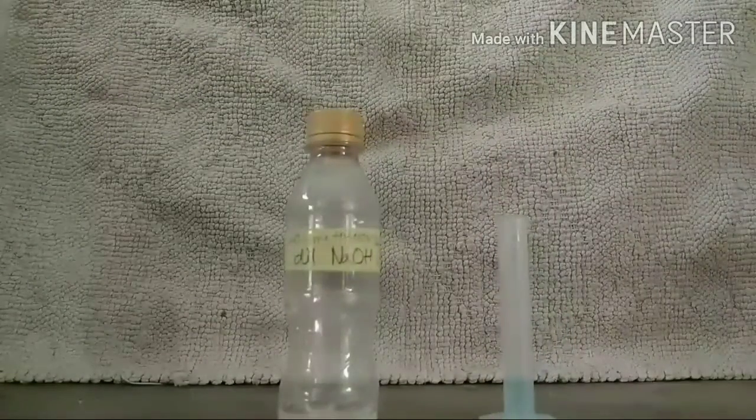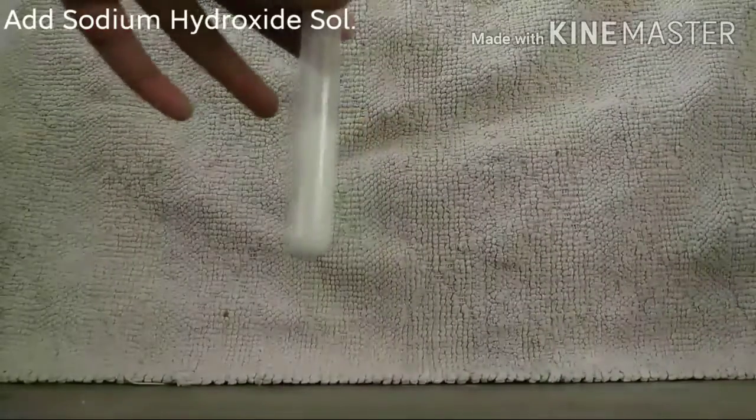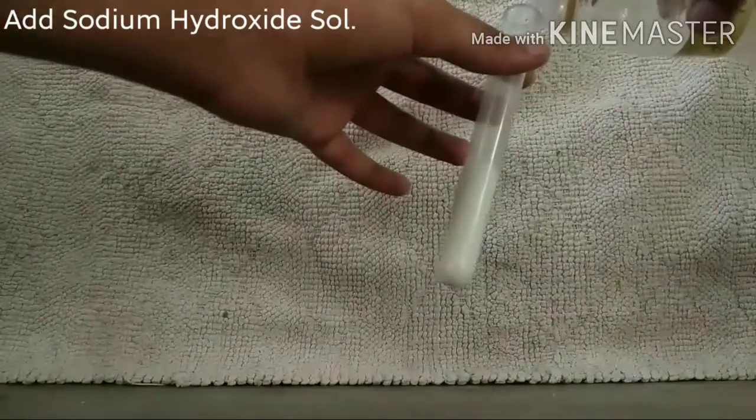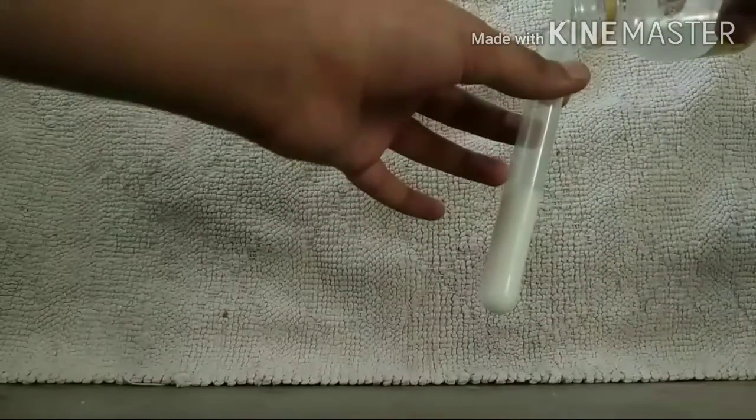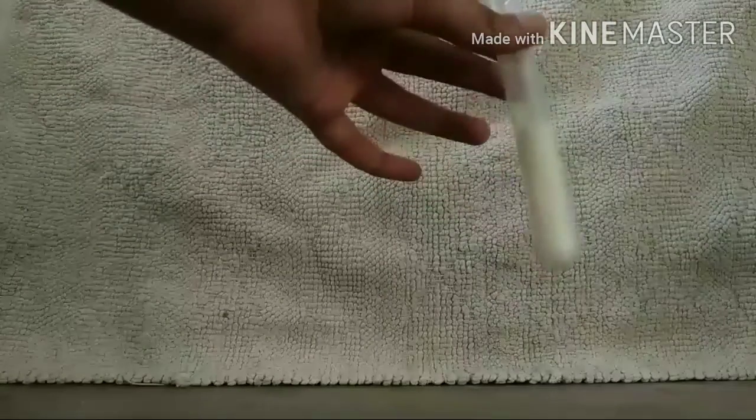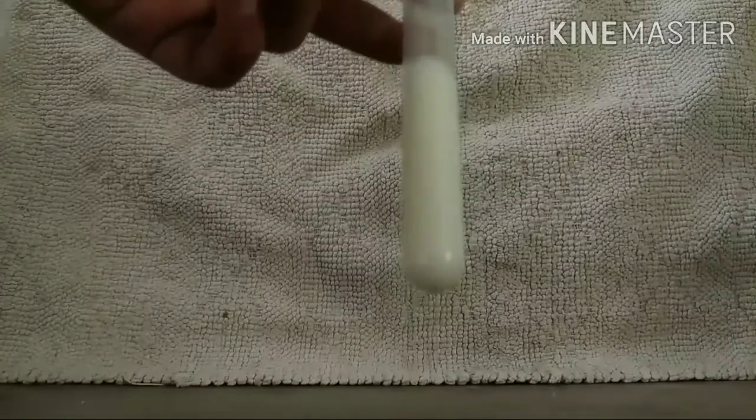Let's get started with the procedure. First of all, we will add the dilute NaOH to this milk. It will create a basic environment. We have to mix it around.